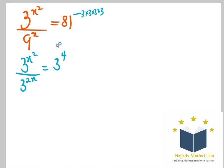Now, using the rule of indices that says that a raised to power m divided by a raised to power n is the same thing as a raised to power m minus n, here I am going to have 3 raised to power x squared minus 2x equals 3 raised to power 4.